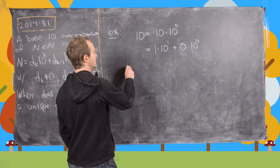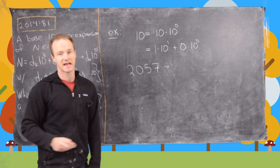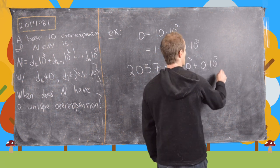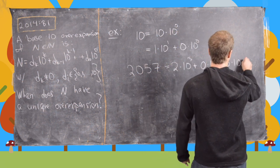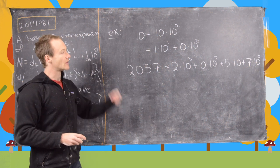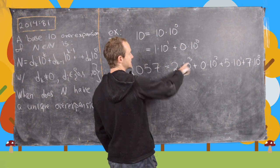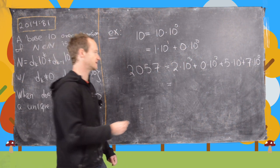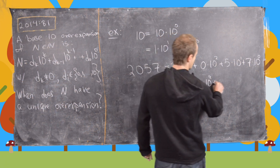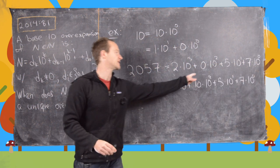Now let's look at another example: 2057. The standard base 10 expansion is 2 times 10 cubed plus 0 times 10 squared plus 5 times 10 plus 7 times 10 to the 0. But we can change that to a base 10 over-expansion by taking one from the thousands place and moving it down to 10 hundreds places. So we can write this as 1 times 10 cubed plus 10 times 10 squared plus 5 times 10 to the 1st plus 7 times 10 to the 0.